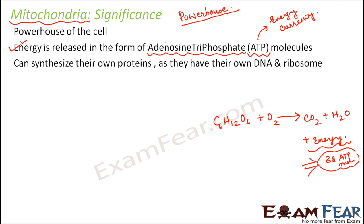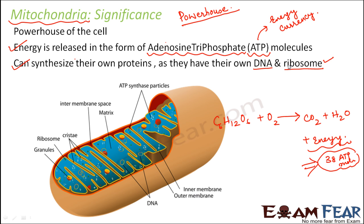Mitochondria can synthesize their own proteins because they have their own DNA and ribosomes. Ribosomes are the site of protein synthesis; DNA produces RNA, and from RNA proteins are produced — both are present inside mitochondria. Therefore, mitochondria are not dependent on proteins from other organelles like the endoplasmic reticulum or Golgi bodies.